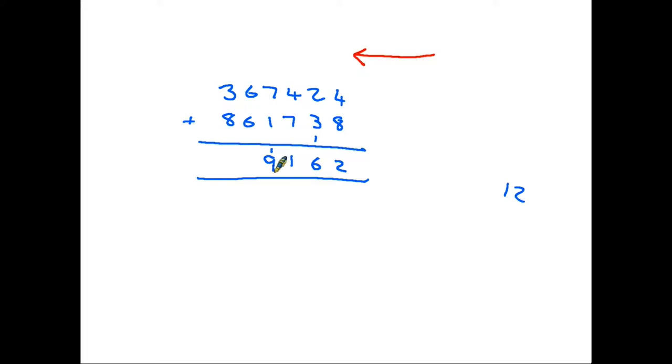The next column we have 6 plus 6 that is 12. We write in the 2 and we carry the 1. We then have 8 plus 3 is 11 plus the 1 that we've carried is 12. The 2 goes in the column. The one we would carry on but in fact we've come to the end of the number so we just put it in as it is and that's our answer.